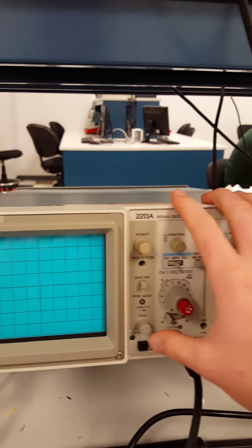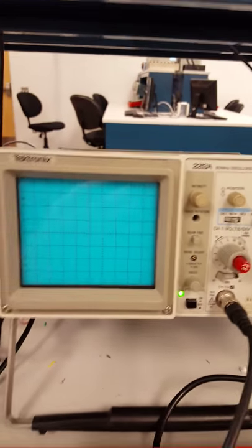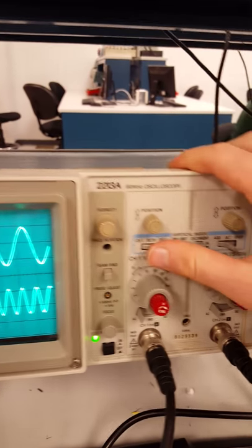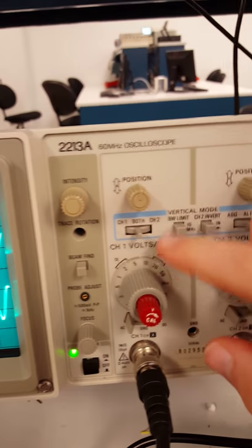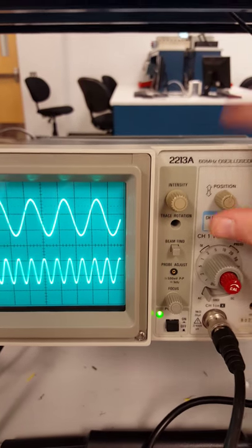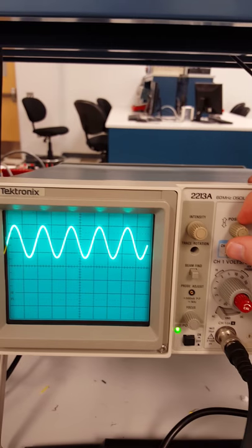So we'll go ahead and turn on the oscilloscope. Alright, and right now it's set to both, so you can see both channel 1 and channel 2. If we switch it to channel 1, then we only get channel 1.